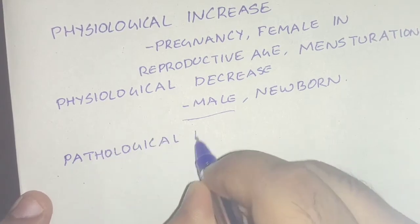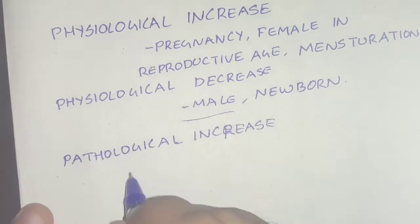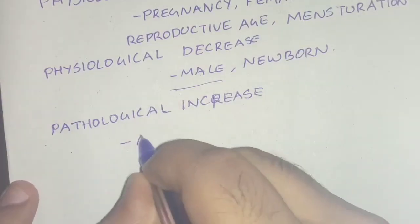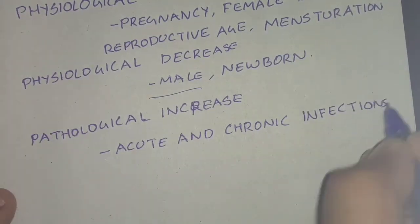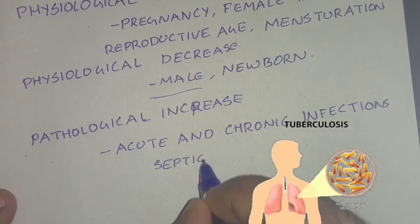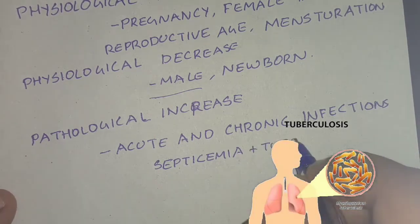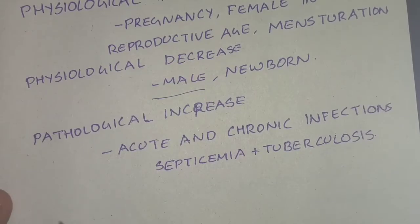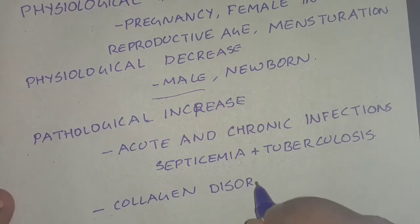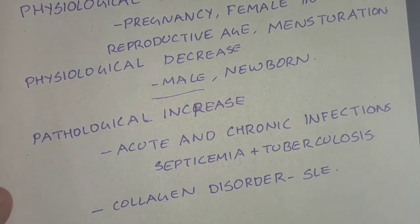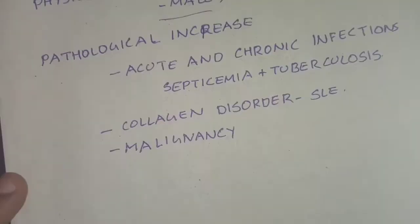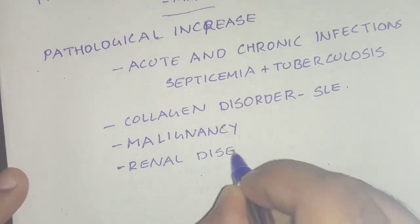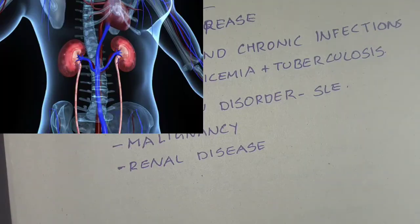For pathological increase: in acute and chronic infections, globulin, fibrinogen, and products of tissue destruction increase rouleux formation. ESR is very high in septicemia and tuberculosis. In collagen disorders like SLE, ESR rises due to increased globulin. Malignancy also causes pathological increase due to products of tissue destruction and increased fibrinogen.